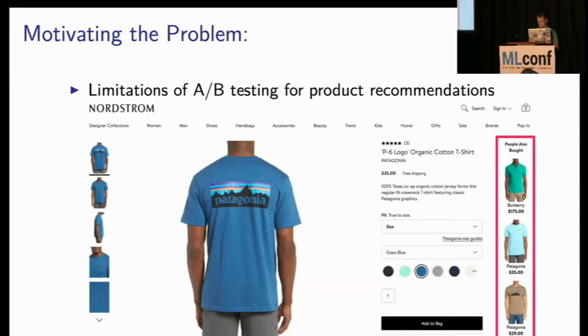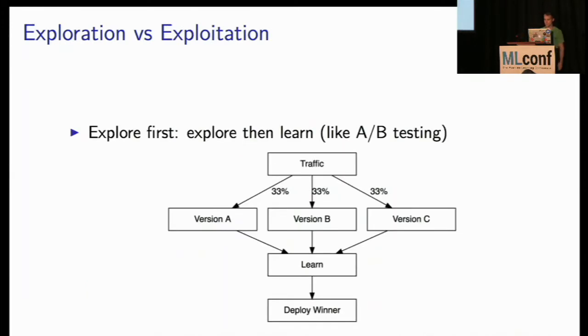However, in the case of a contextual multi-armed bandit, you're bringing in also the context of what you know about the people and the products that would allow you to not just find one winner for everybody, but a winner for a specific group of people or a winner in a given context. So you might think about this as maybe somebody who is in Seattle, you might want to recommend pants to go along with this T-shirt, but if they're in Arizona, you might want to recommend shorts. So that would be a contextual variable.